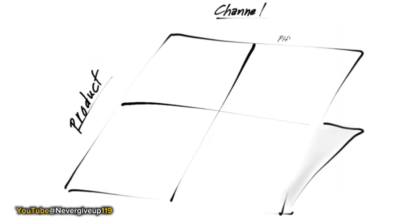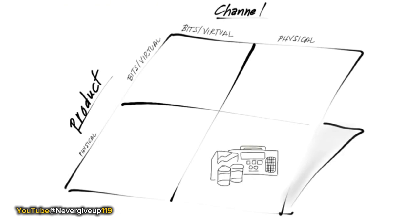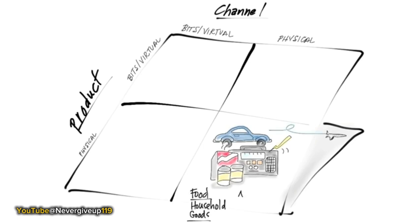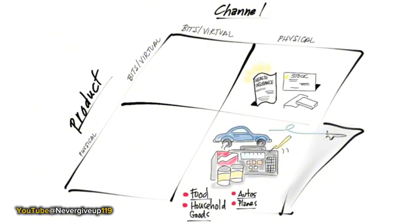One of the best ways to understand channels is to think about how business first started. We first started distributing physical products — cars, food, utilities — and we distributed them through a direct sales force: people you shook hands with and met in person. It wasn't until the mid-20th century that we started selling virtual products — things that didn't quite exist physically, like insurance, stocks and bonds, enterprise software, and shrink-wrap software — distributed through physical channels, but not existing in the real world.